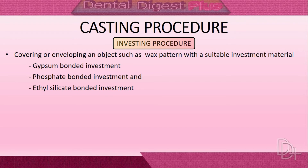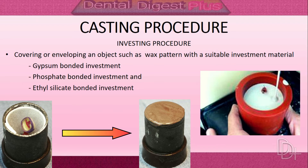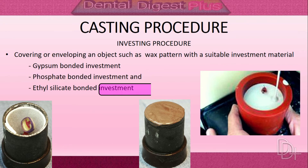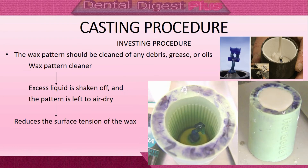The seventh step is the investing procedure — the process of covering or enveloping the wax pattern with a suitable investment material before casting. Investment materials used include gypsum-bonded investment, phosphate-bonded investment, and ethyl silicate-bonded investment. The wax pattern should be cleaned of any debris, grease, or oils using a commercial wax pattern cleaner or diluted synthetic detergent. The thin film of cleanser reduces surface tension and permits better wetting by the investment.